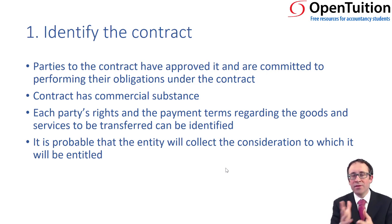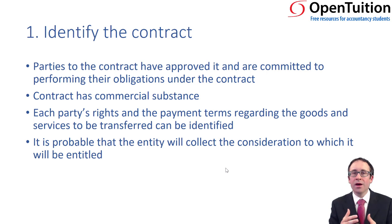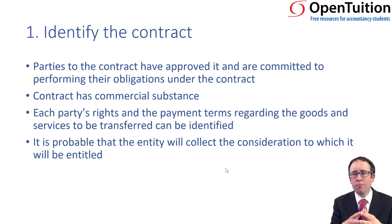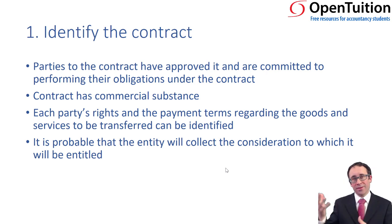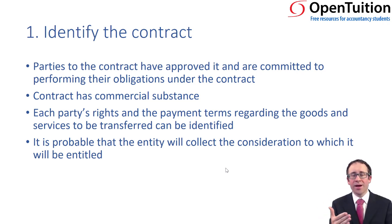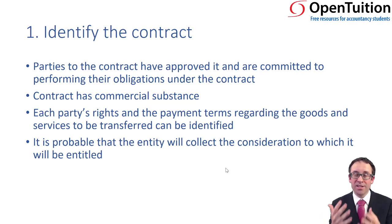There is a verbal or implied contract between the two parties. Key bit is: if you're thinking about recognition and income, we need to make sure that it's probable and measured reliably. The measure reliably aspect comes in step three by looking at the transaction price. The probability is within the contract — does the contract, whether written, verbal, or implied, actually give rise to the expectation that it will probably be settled? It's more likely than not that it will be settled.